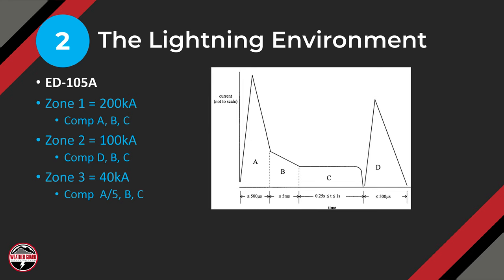Step two is looking at the lightning environment, defined in ED-105A. It takes those zones and applies lightning energy to evaluate damage. As a rule of thumb: lightning Zone One is a 200,000-amp strike with current components A, B, and C. Lightning Zone Two is 100,000 amps, which is components D, B, and C, if you look in the spec.